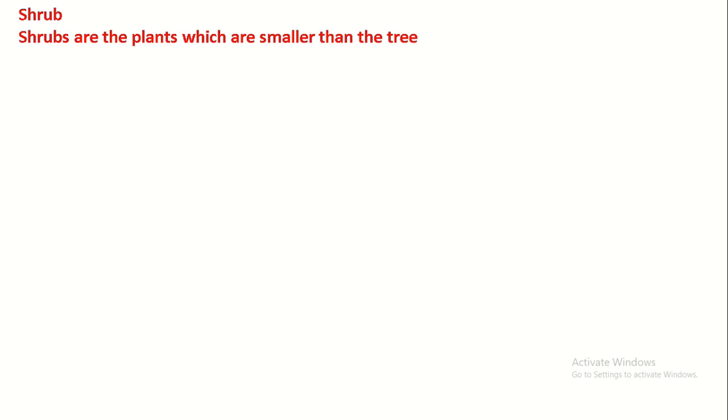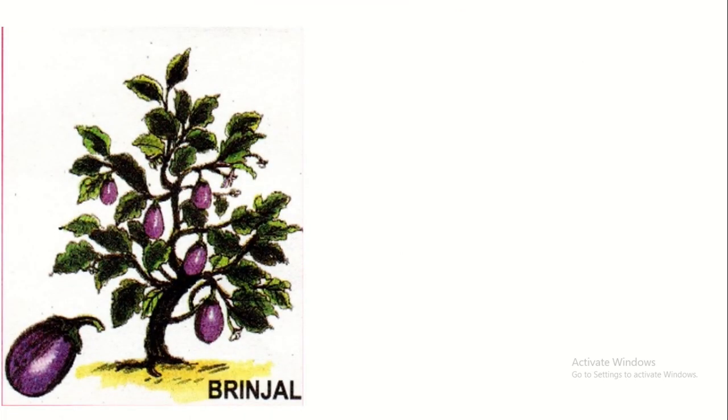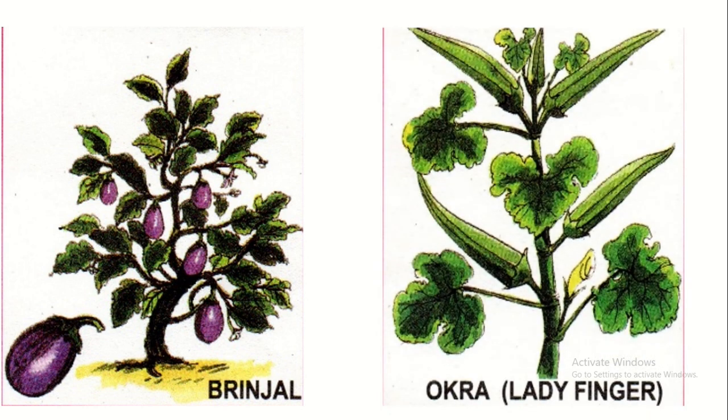Shrubs are the plants which are smaller than trees. Shrubs have fruits. They have a stem. They have leaves and small branches. Some examples are oleander and ladyfinger.